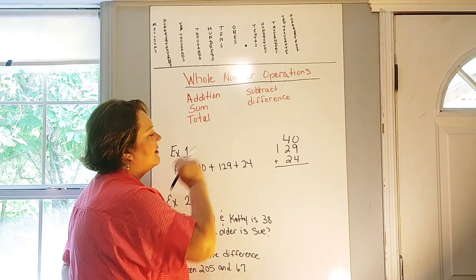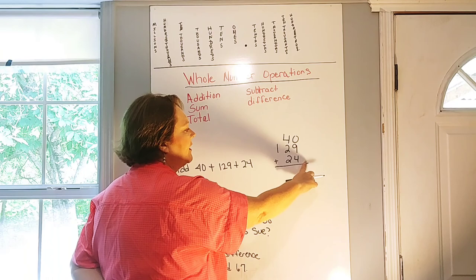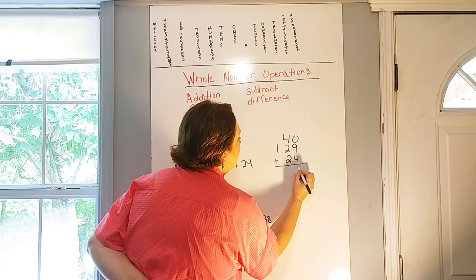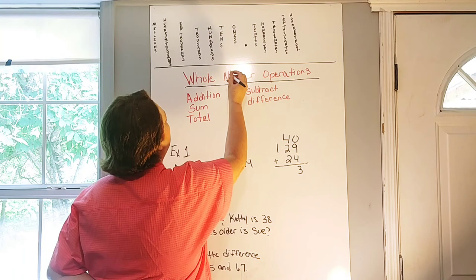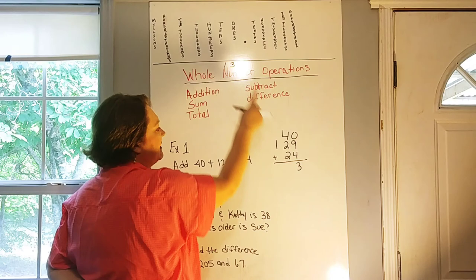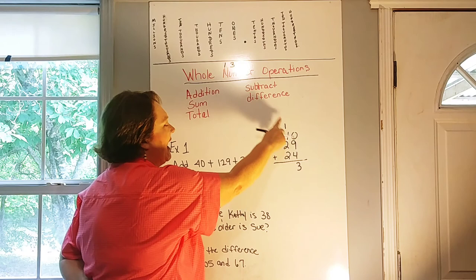So if we're adding those together, we look in our ones column and we start there first. We have a zero and a nine. That's just going to be nine. And then we have a four. Nine plus four is 13. So again, this is our ones place. So if we have the number 13, I'm going to go up here and write it in. We see that the three is in the ones place. We can't put a 10 in the ones place. So we're going to regroup and we're going to carry that over and add that one in with our tens column.